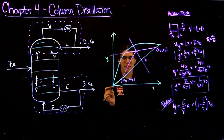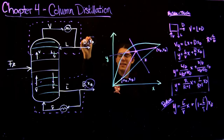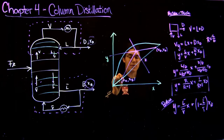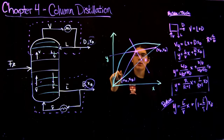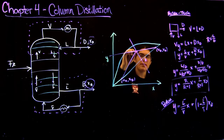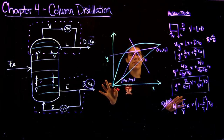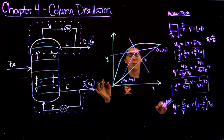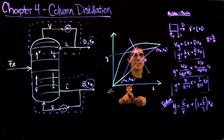Some really important intersection points: XB and XD are always going to be points on your y equals x line. Likewise, your top and bottom operating lines will always intersect at a point that also intersects with the Q line. This may seem like random information at the moment, but it'll be really useful when you're stuck plotting and don't know where to go next.